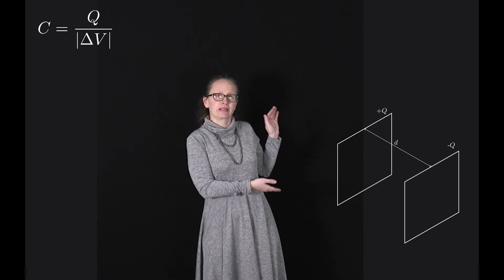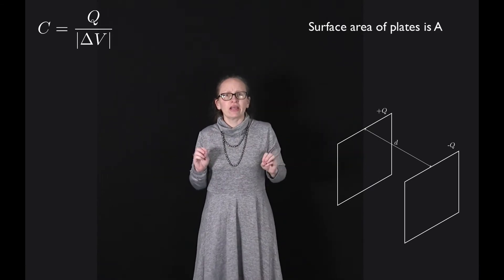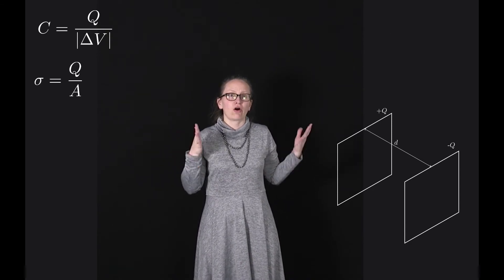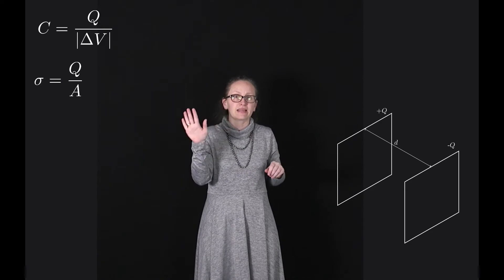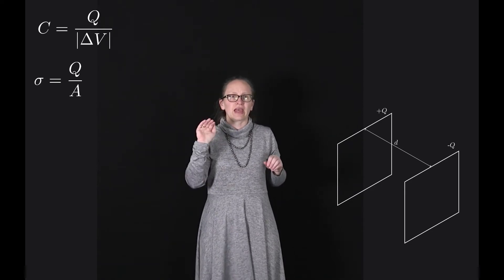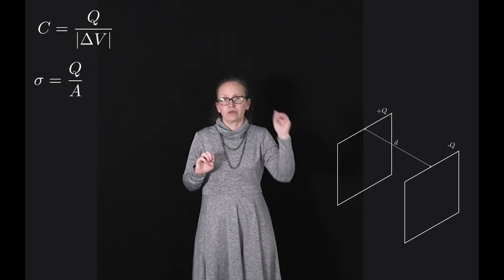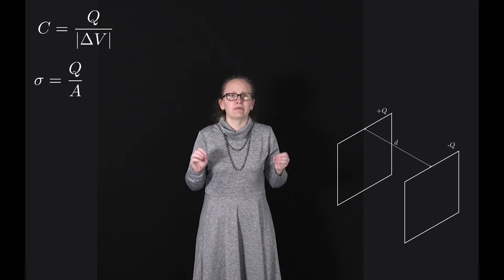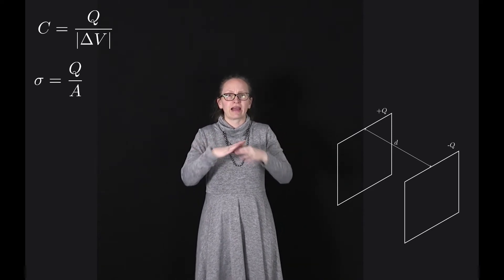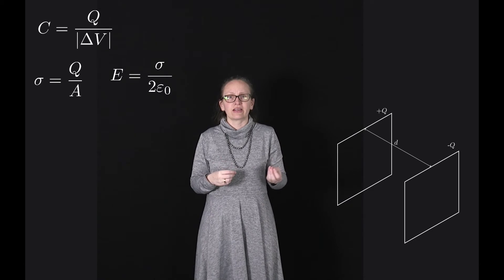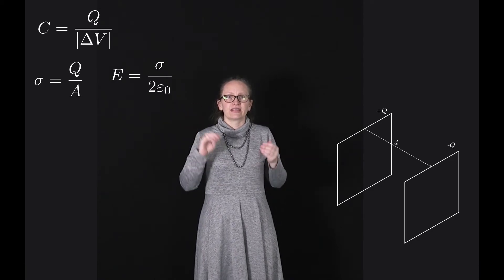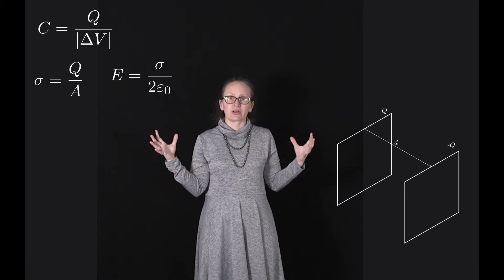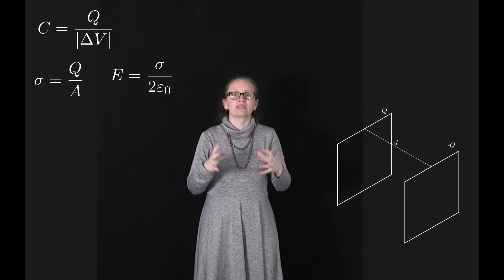Let's consider our parallel plate capacitor. If the area of the plates is capital A, then we can write that the charge density on each of the plates is given by sigma, which is equal to Q over A for the positive plate and minus Q over A for the negative plate. Previously we've used Gauss's law to show that around one plate, the electric field is given by the equation E is equal to sigma divided by 2 epsilon naught, and this is away from a positive plate and towards a negative plate.